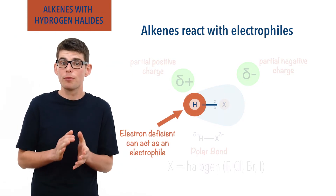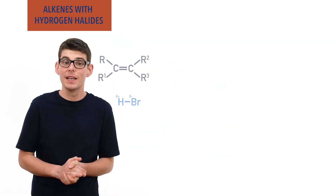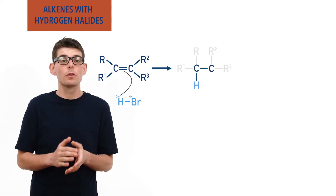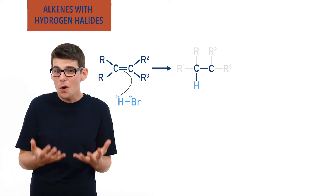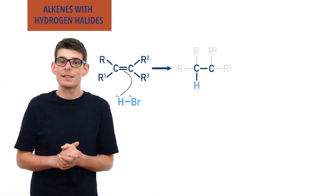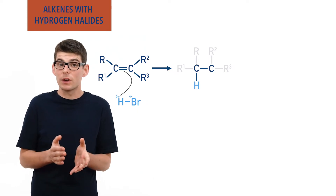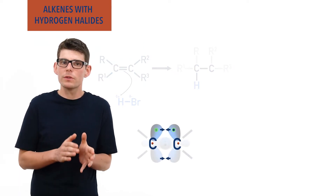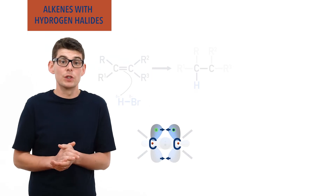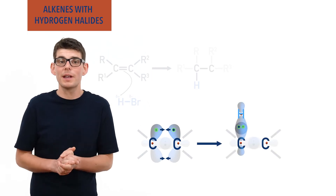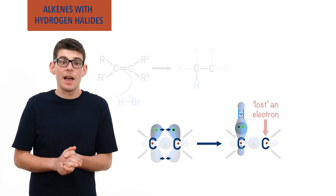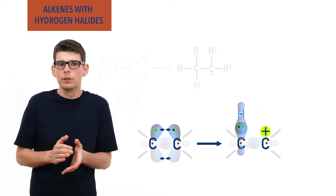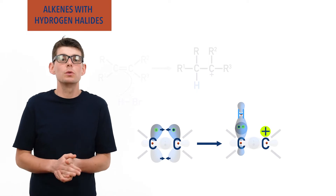As a hydrogen halide molecule approaches the carbon-carbon double bond in an alkene, the electron-deficient hydrogen will accept the pi bonding electrons from the double bond and form a new bond to one of the carbon atoms. This breaks open the double bond and a single sigma bond gets left between the two carbon atoms, meaning the carbon chain doesn't get broken. The pi bond contains one electron from each of the carbon atoms, meaning as it breaks and a new bond with that pair of electrons gets made, one of the carbon atoms effectively loses an electron. As a result, this other carbon atom ends up with a positive charge.